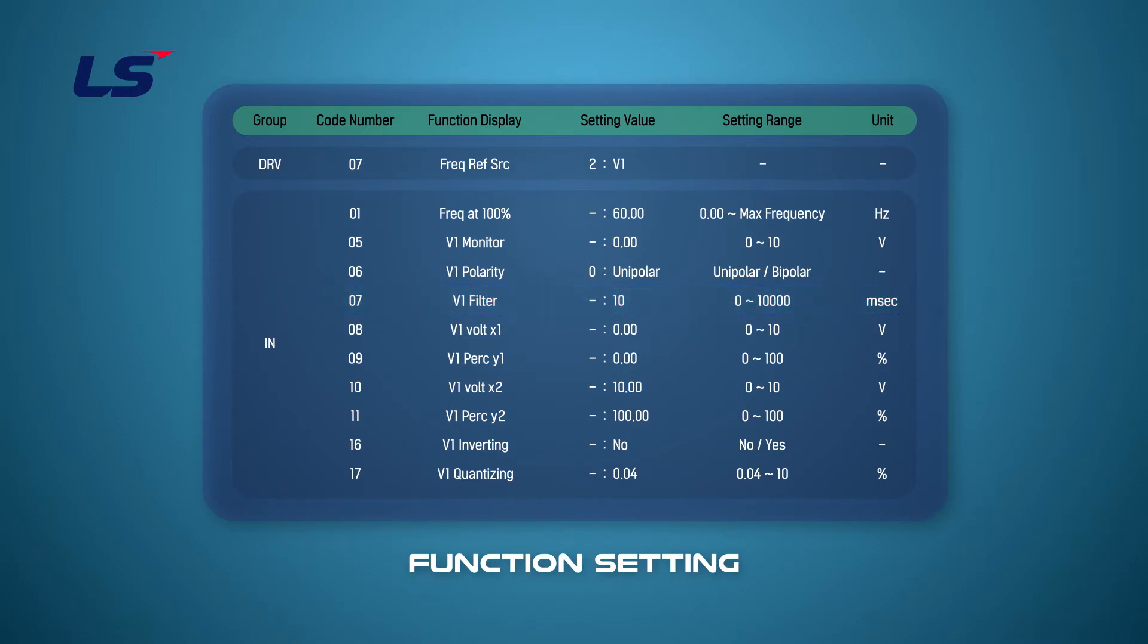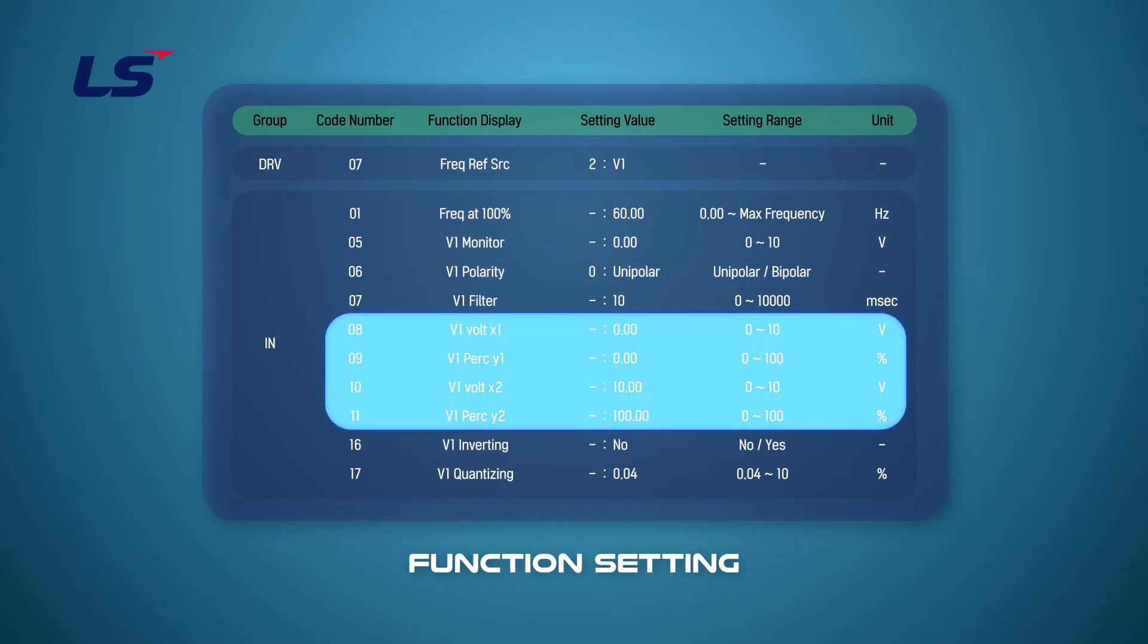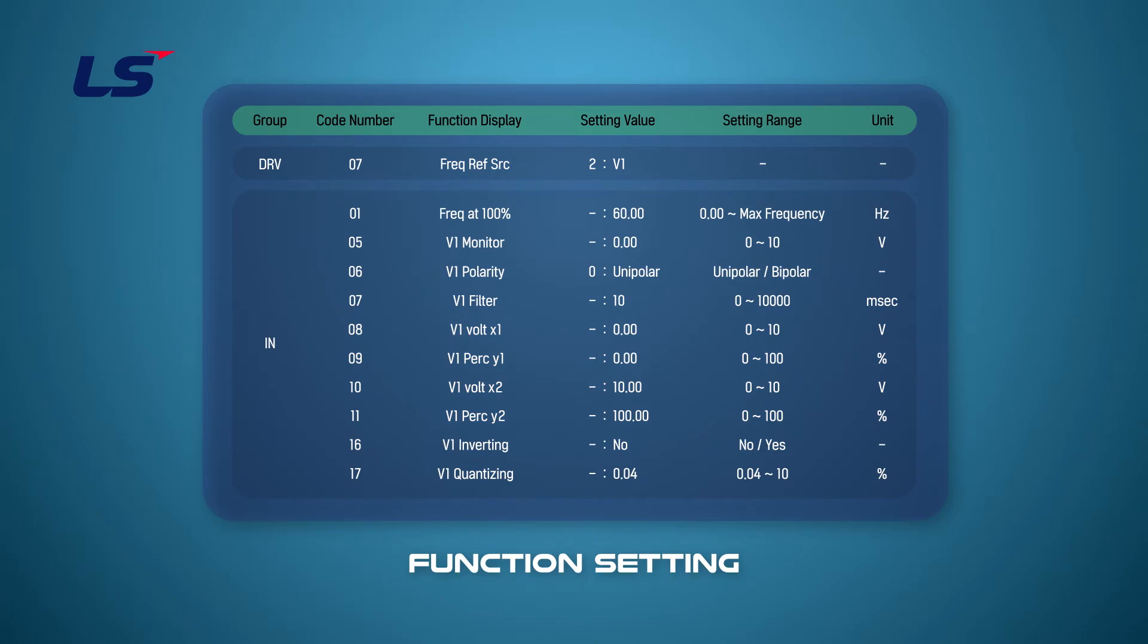You can set the time constant of filter for analog voltage inputs in IN-group 7. Parameters IN group 8 to 11 allow you to set the range of input voltage. You can set the minimum input voltage and the corresponding frequency, and maximum input voltage and corresponding frequency. The frequency corresponding to 100% of the analog input can be set in parameter IN group 1.